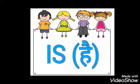First we will do the use of 'is'. Is ka matlab kya hota hai? Is ka matlab hota hai 'hai'. Jaise ki mera naam Suman hai — My name is Suman. My matlab mera, name matlab naam, is matlab hai. So my name is Suman matlab mera naam Suman hai. So is ka matlab — what is the meaning of 'is' — hai.